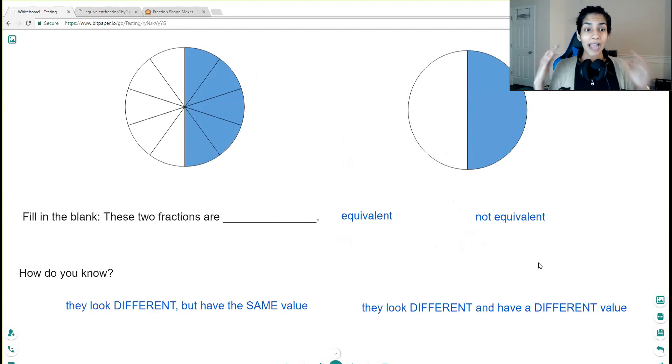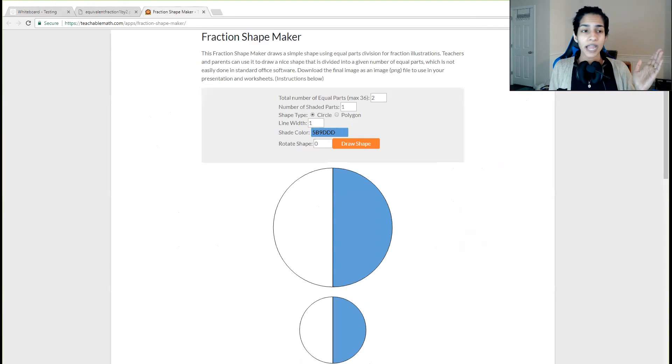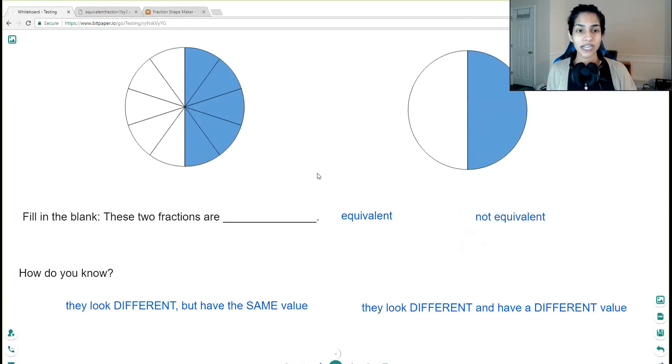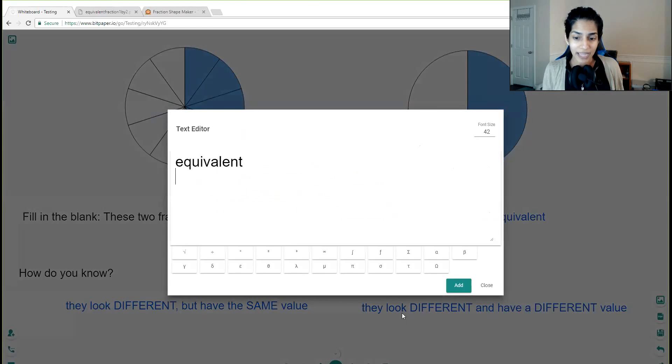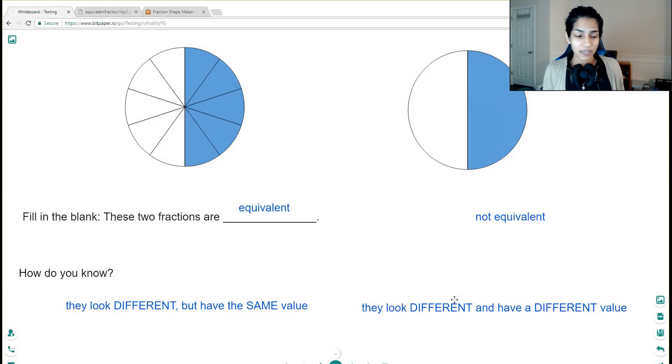I used a fraction shape maker, which I found online, and I created two different fractions here. There is the five tenths and the one half, and basically created like a little question for her. So fill in the blank. These two fractions are equivalent or not equivalent. So all she has to do is click on the correct answer, and she could drag it right into that spot.